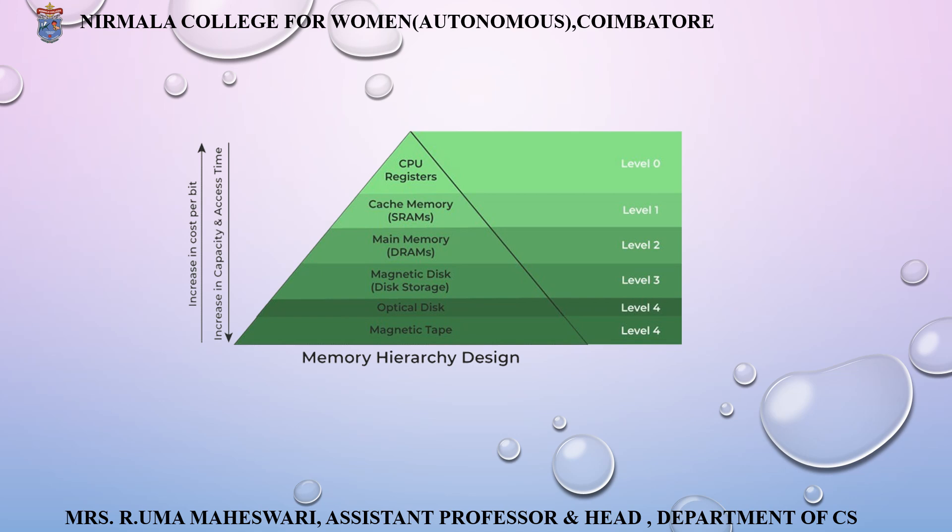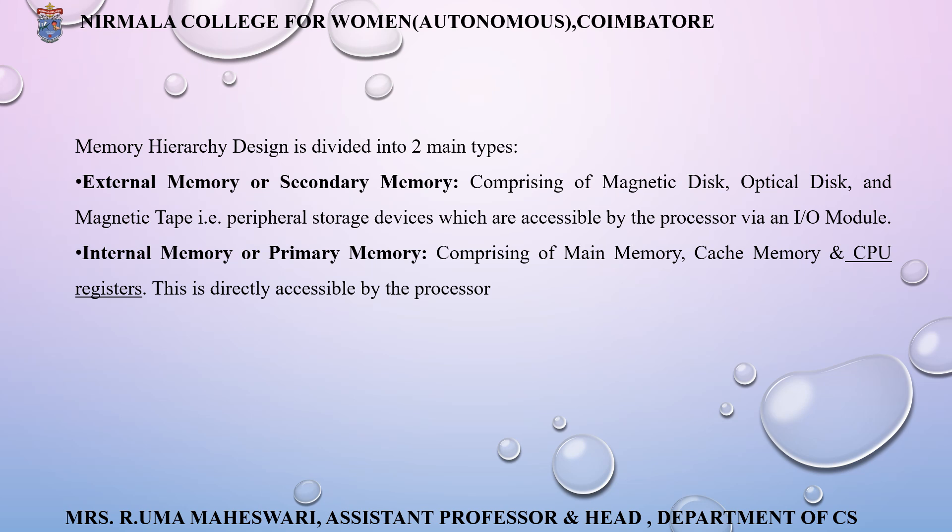These are the memory hierarchy design levels, from level 0 up to level 4. The memory hierarchy design can be divided into two types: external memory and internal memory. External memory is also referred to as secondary memory, which comprises disk, optical disk, and other secondary storage devices. Internal memory is also known as primary memory, which comprises main memory, cache memory, and CPU registers.